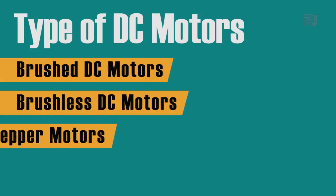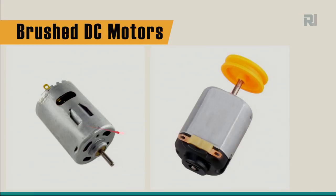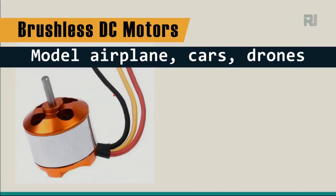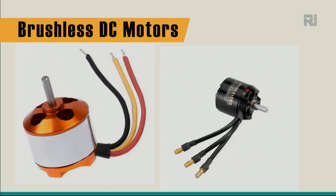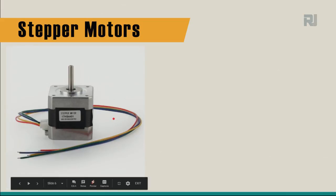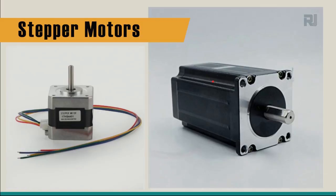There are different types of DC motors: brushed DC motors, brushless DC motors, and stepper motors. Here is an example of a brushed DC motor with terminals to connect wires. Brushless DC motors usually have three or more wires and are used in airplanes and drones. Stepper motors typically have four, five, or more wires and are used in CNC machines, 3D printers, and other robotic applications.